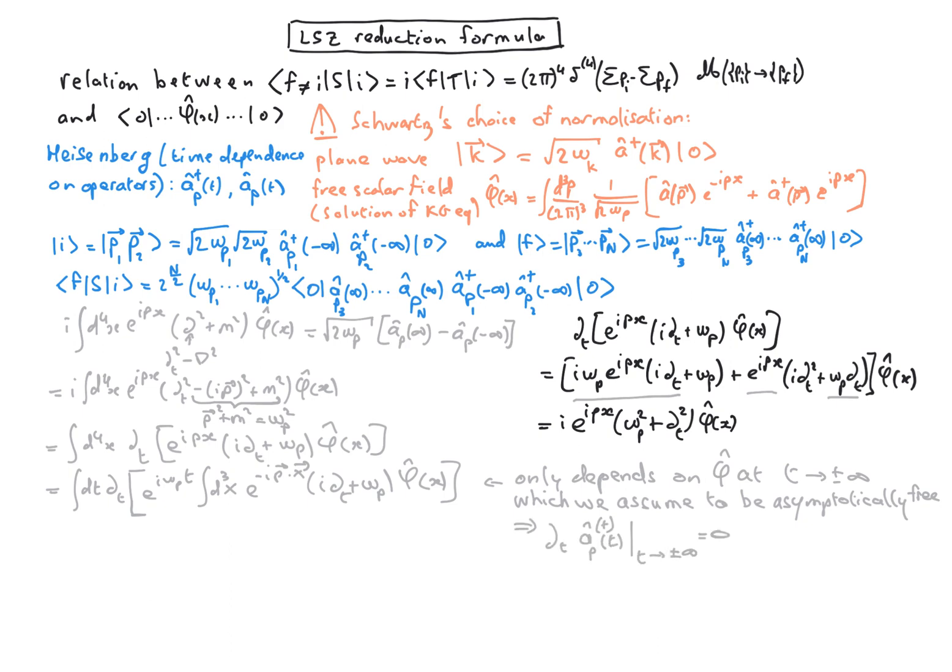So we will use that to rewrite this term by first substituting the field operator by its expression for a free field. And by neglecting all the time derivatives of the creation and annihilation operators because all that matters at the end will be the asymptotic field due to the total derivative here. And therefore all these time derivatives of creation and annihilation operators at t goes to plus or minus infinity are zero.